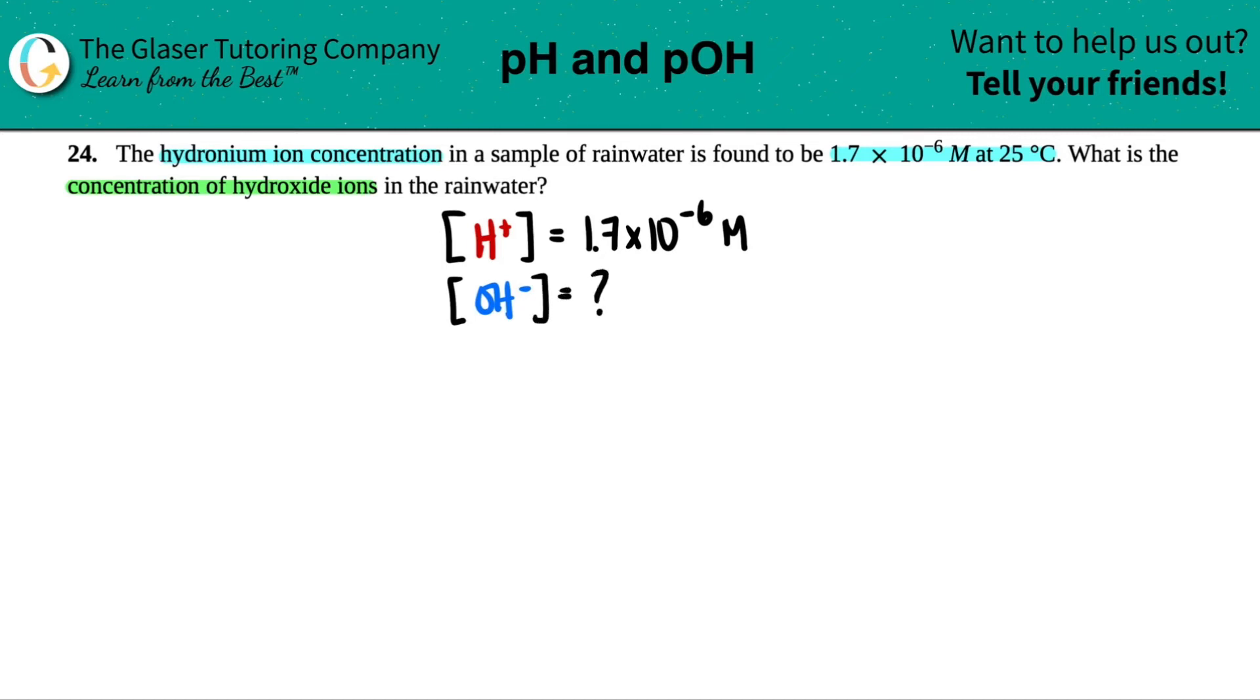So I think to myself, do I know any equation that links H plus to OH minus? And yes, I do. There is one of them, and that is this equation right here. It's the KW equation: KW equals H plus times OH minus.